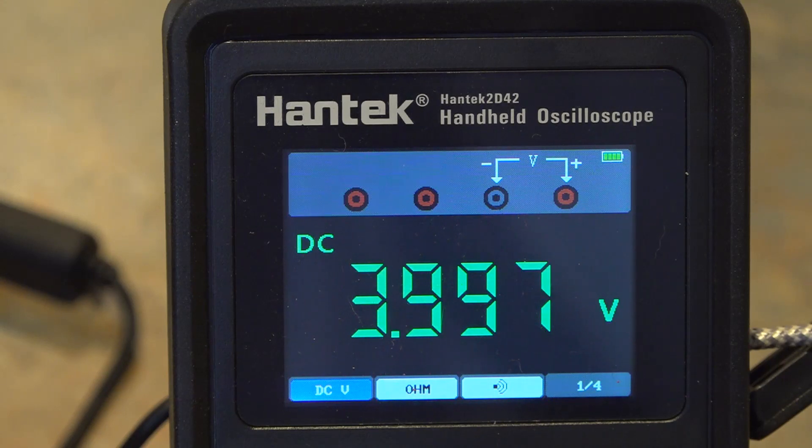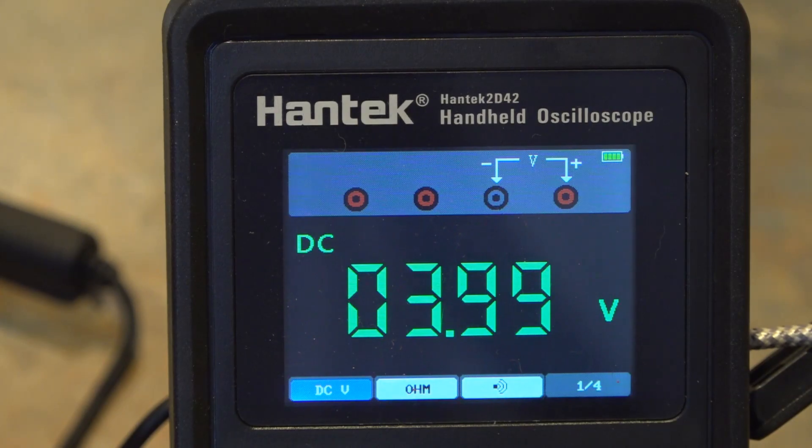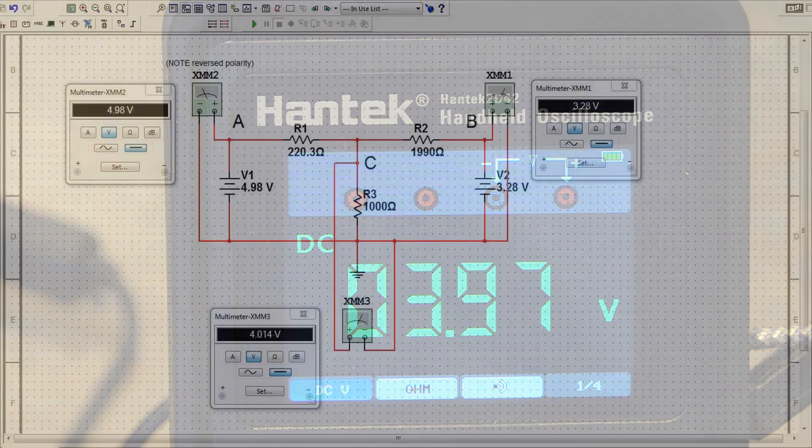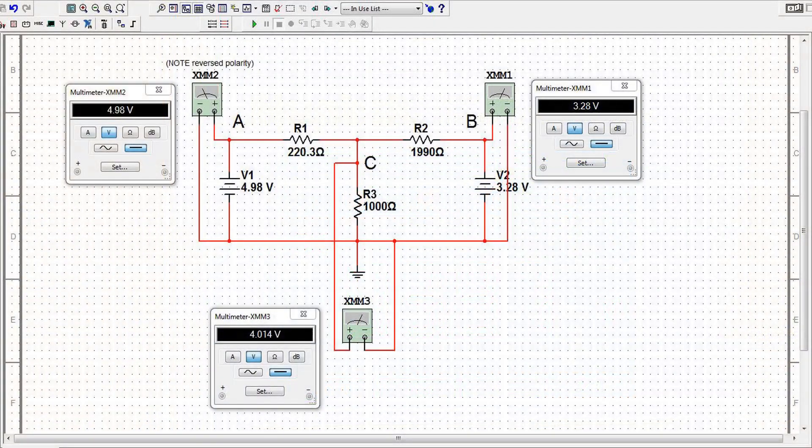But that's to be expected with a meter of this caliber. But still I mean it's relatively accurate, it's at least two digits of accuracy.